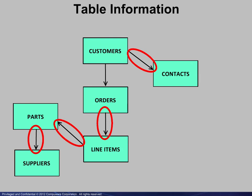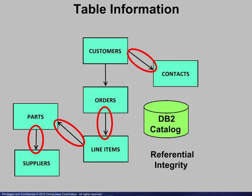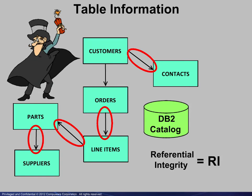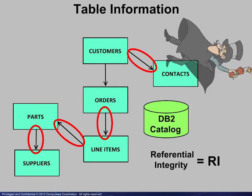These table relationships are stored in the DB2 catalog. The referential integrity, or RI, is maintained by DB2 itself. All foreign keys have matching primary keys, and rogue records are not allowed.